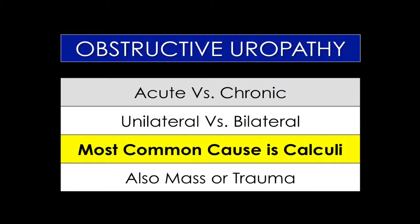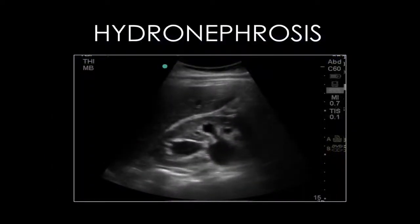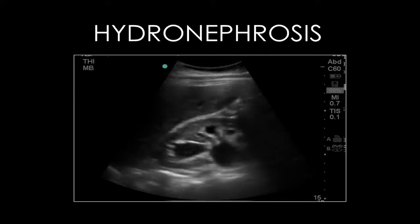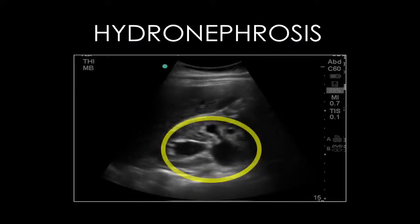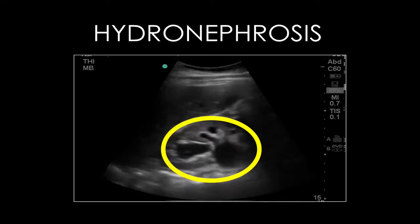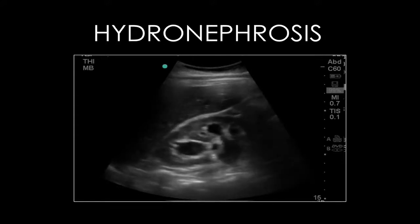Obstructive uropathy can be acute or chronic and unilateral or bilateral. The most common cause of obstruction is calculi that develop in the kidney and become lodged in the ureter. However, a mass or trauma can also cause renal obstruction. Obstructive uropathy causes dilatation of the collecting system in the kidney, seen on ultrasound as anechoic fluid expanding the renal sinus. In this video, it is easy to see how the pressure created by a stone obstructing the ureter has caused this to occur. This finding is referred to as hydronephrosis.